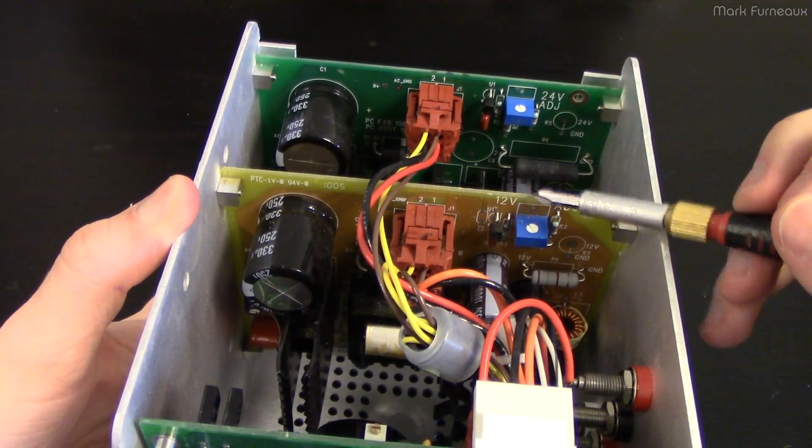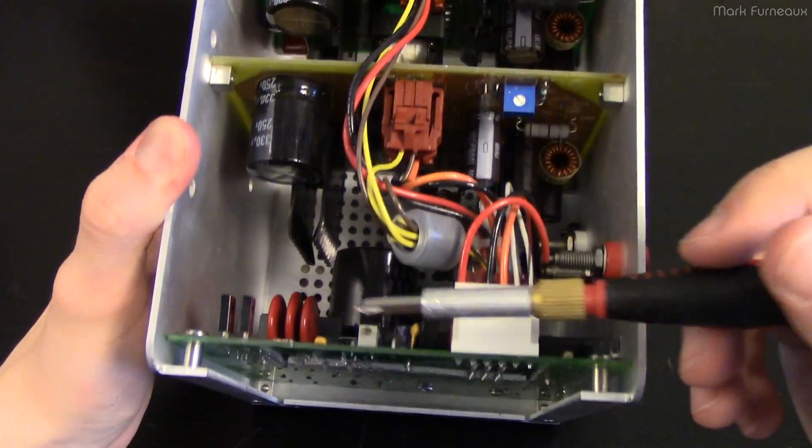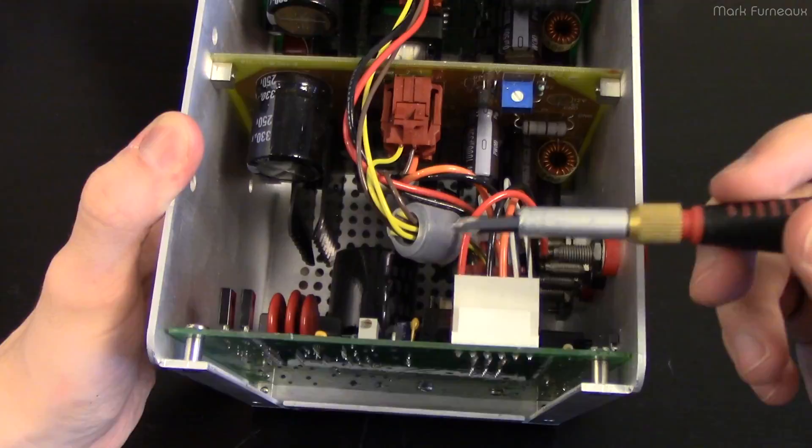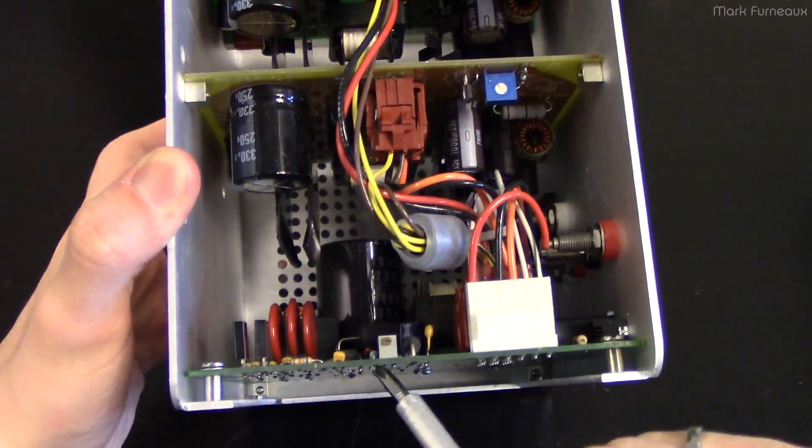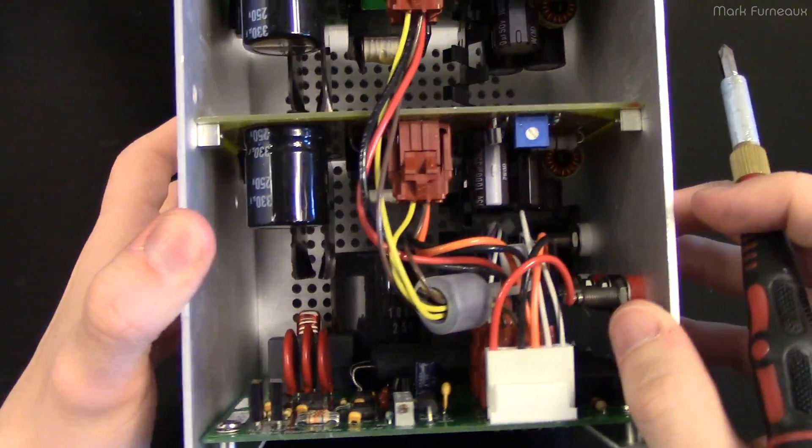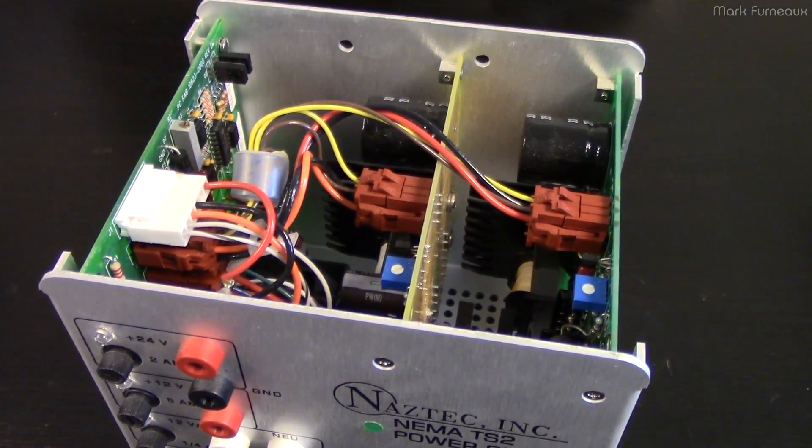So we've got 12 volt adjust, 24 volt adjust. So this would be your 12 volt DC. This would be your 24 volt DC. And I suspect that the 24 volt AC comes out of this, or sorry, the 12 volt AC comes out of this board here. Okay. So I think the best way to take a look at this is to pull out each of these boards.